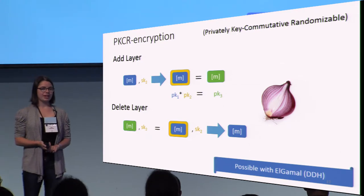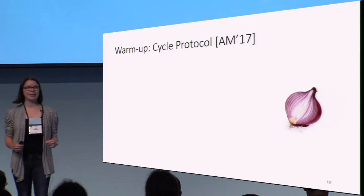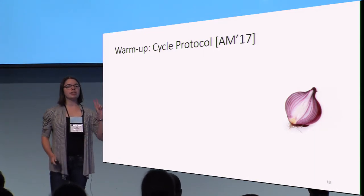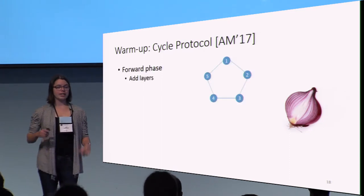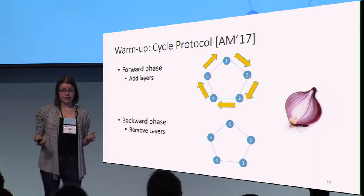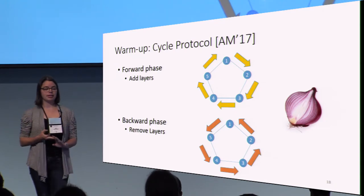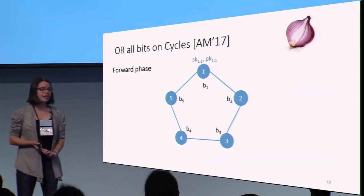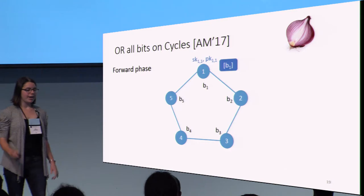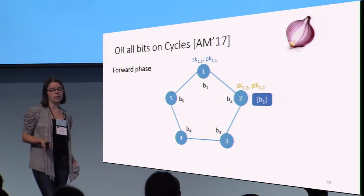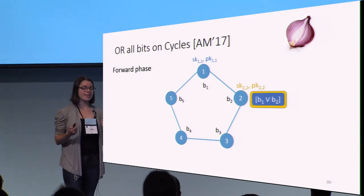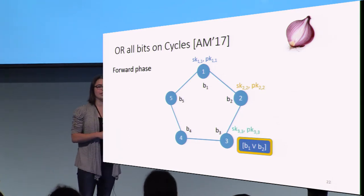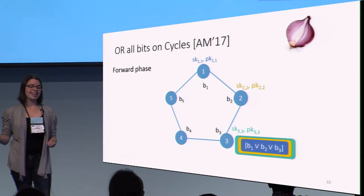Now that we have both of these tools, let's go through a warm-up protocol before getting to our actual protocol for all graphs. I'm going to discuss the Akevia-Moran protocol for getting OR on cycle graphs. There are going to be two phases. The first phase is a forward phase where we add layers going one way around the graph. The next phase is a backwards phase where we remove layers going back around the other way. Let's focus on how node 1 is going to get the correct output bit. In round 1, node 1 encrypts its bit and sends it to node 2. Node 2 in round 2 generates a new public-secret key pair, adds a layer, homomorphically OR's its own bit, and sends the resulting message to node 3. Node 3 does the same: generates a new public-secret key pair, adds a layer, OR's its own bit homomorphically, and sends it to node 4. Node 4 adds a layer and OR's its bit and sends it to node 5. Node 5 doesn't need to add another layer — it just homomorphically OR's its own bit.